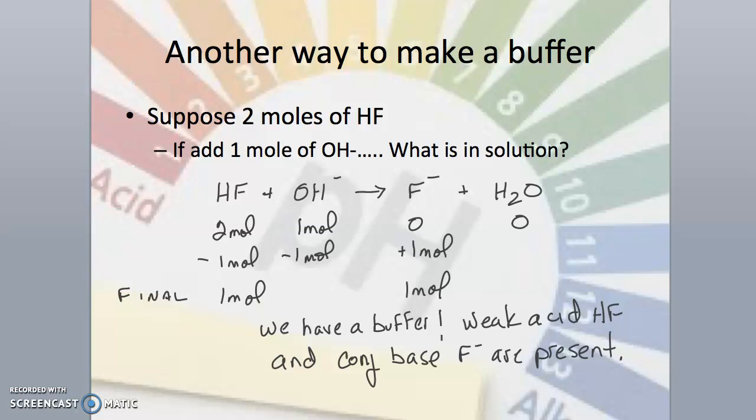In this lecture, we introduced the Henderson-Hasselbalch equation, which can be used to calculate the pH of buffer systems. This equation can also be useful to determine the relative amounts of conjugate pairs needed to produce a buffer at a desired pH. Thanks for watching, and stay tuned for our next lecture, where we will explore how a common ion can affect the pH.